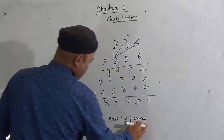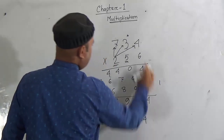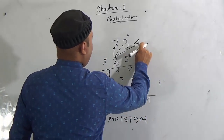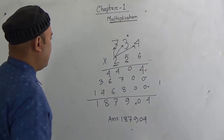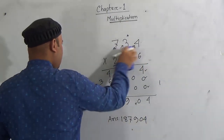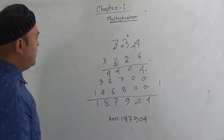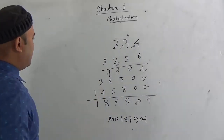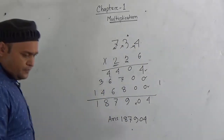So the answer is 187,904. This result is called the product, the second number is called the multiplier, and the first number is called the multiplicand. My students, hope you understood the procedure of multiplication — practice it at your home.